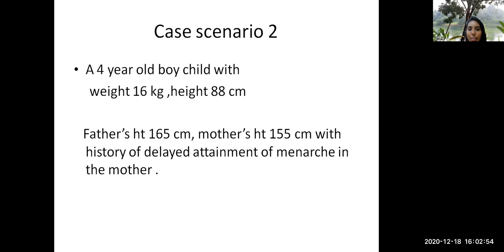So now coming to the next, a four-year-old boy child with weight of 16 kg, height of 88 centimeters, father's height is 165 centimeters, mother's height is 155 centimeters, with history of delayed attainment of menarche in the mother.